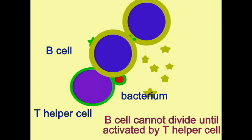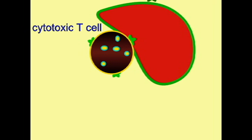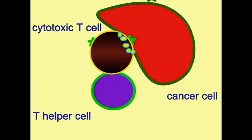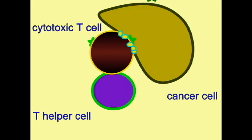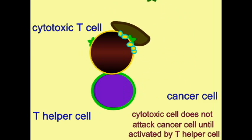The cytotoxic T cells, also known as killer T cells, secrete molecules known as perforins onto a foreign cell or an infected cell. These perforins then form a hole in the cell membrane of the second cell, which will destroy it.